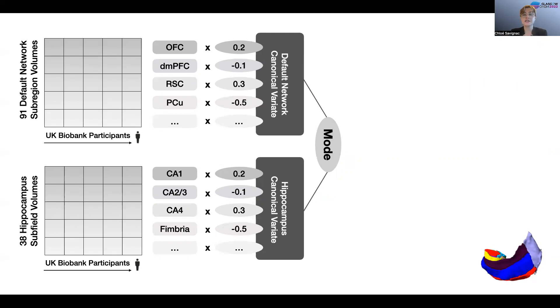By construction, these population signatures are ranked by importance. Each mode does represent a different brain signature that accounts for increasingly less shared variance between the allocortical and neocortical atlas at sub-region resolution. We decided to keep the first 25 modes of hippocampus default network covariation for further analysis.